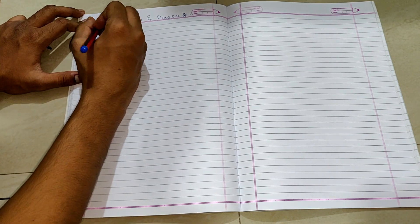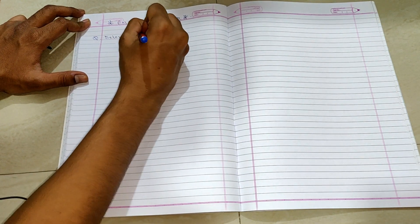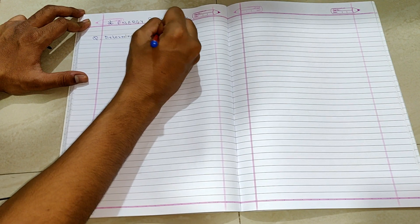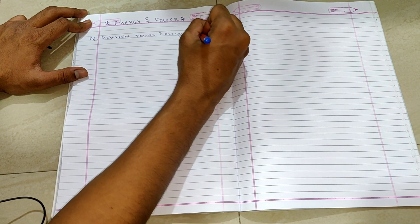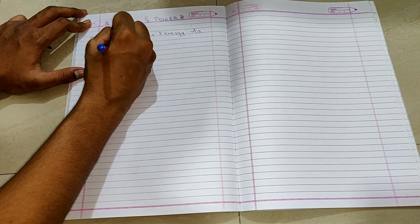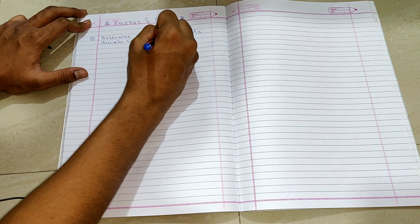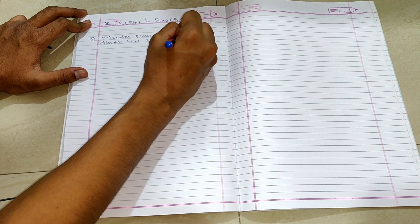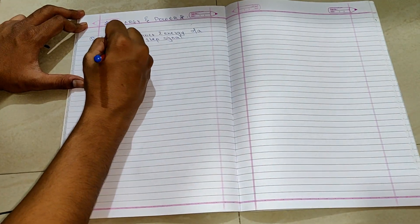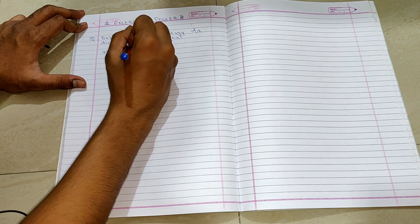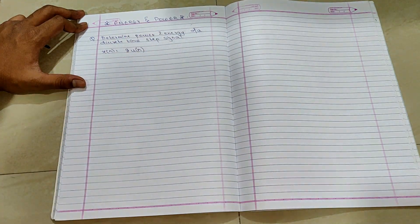We have a signal, so determine power and energy of a discrete time step signal. So x of n is given as 8u of n. So solution.